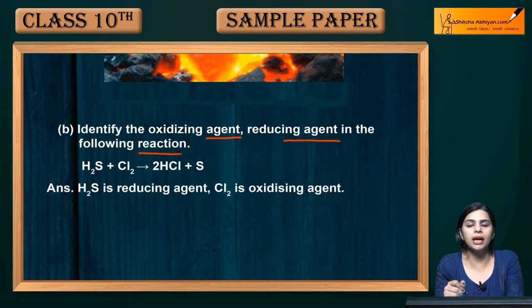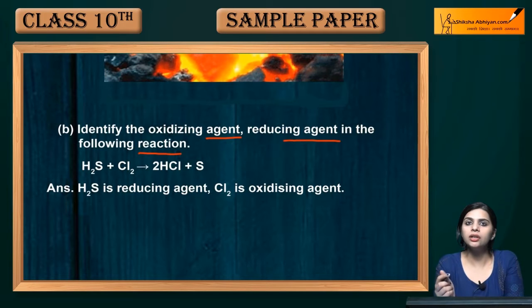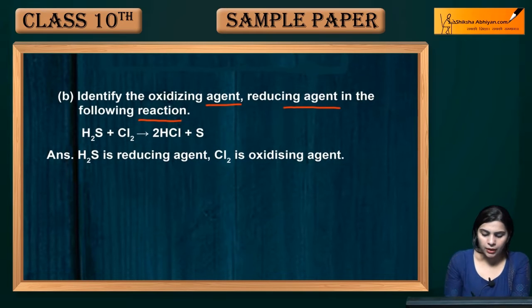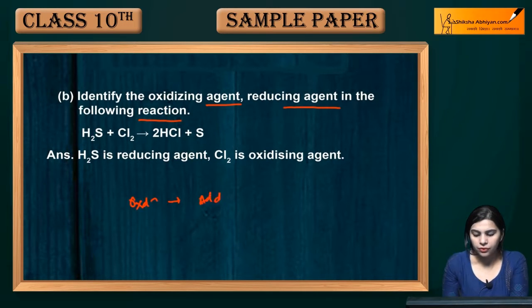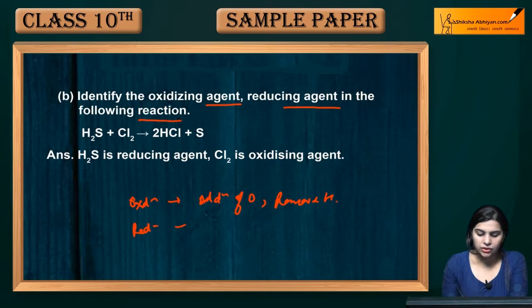You need to identify which is the oxidizing agent and which is the reducing agent. Oxidation is the addition of oxygen or removal of hydrogen. Reduction is the addition of hydrogen and removal of oxygen.